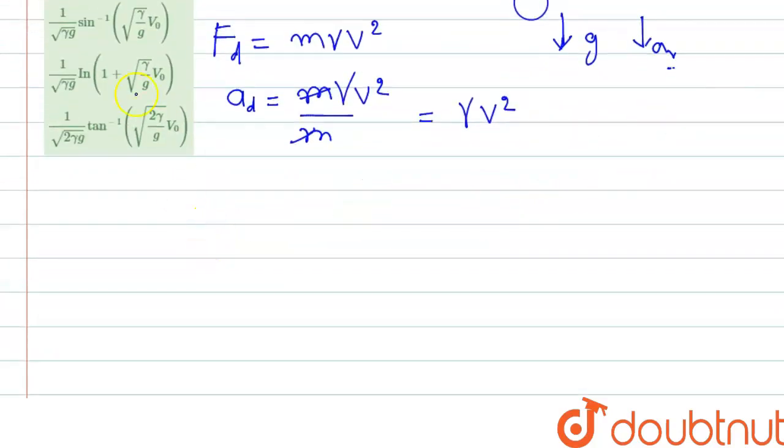So the net acceleration we can write here: net acceleration, that is the acceleration due to gravity plus the acceleration due to retardation, that is gamma v square. And the sign is negative because these are acting downward, against the velocity.